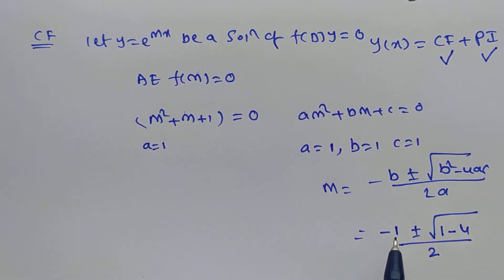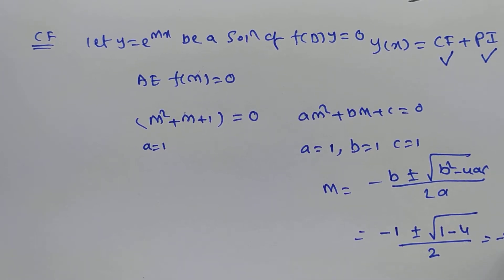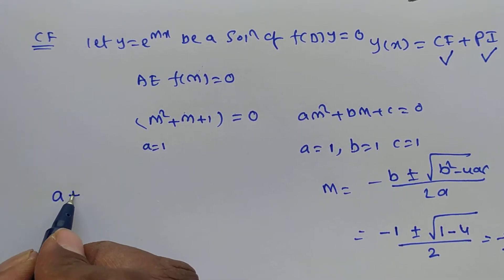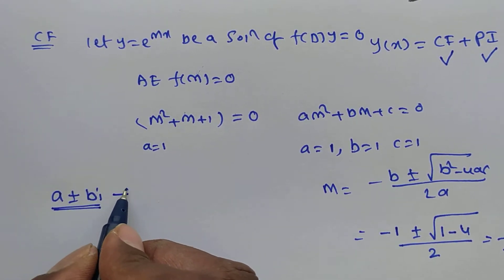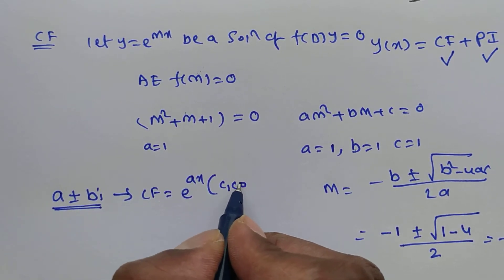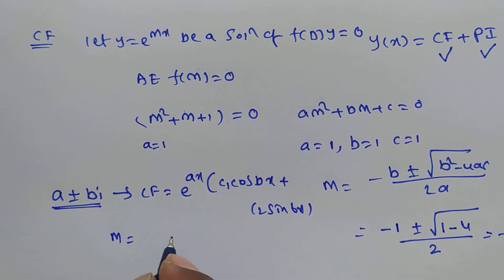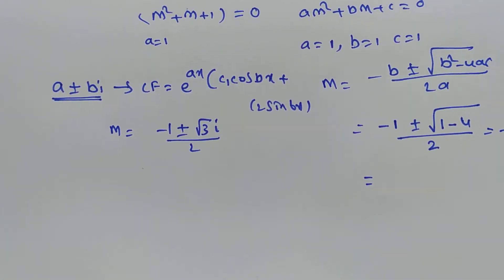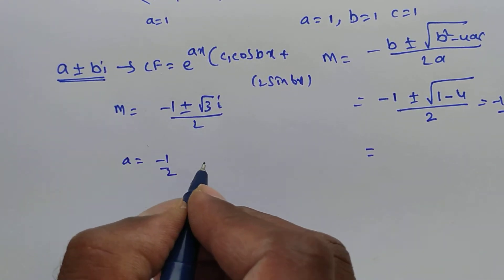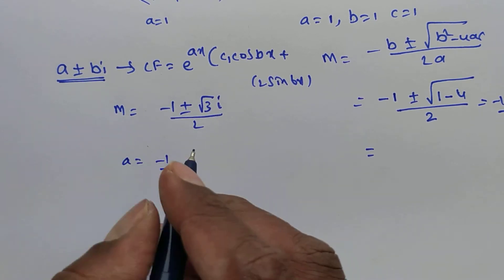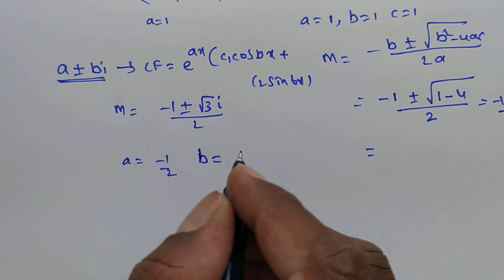Simplifying, we have m = (−1 ± √3·i) / 2. This is of the form a ± bi where a is the real part and b is the imaginary part. The real part is −1/2 and the imaginary part is √3/2. Since the roots are complex, the complementary function takes the form e^(ax)(c₁cos(bx) + c₂sin(bx)).